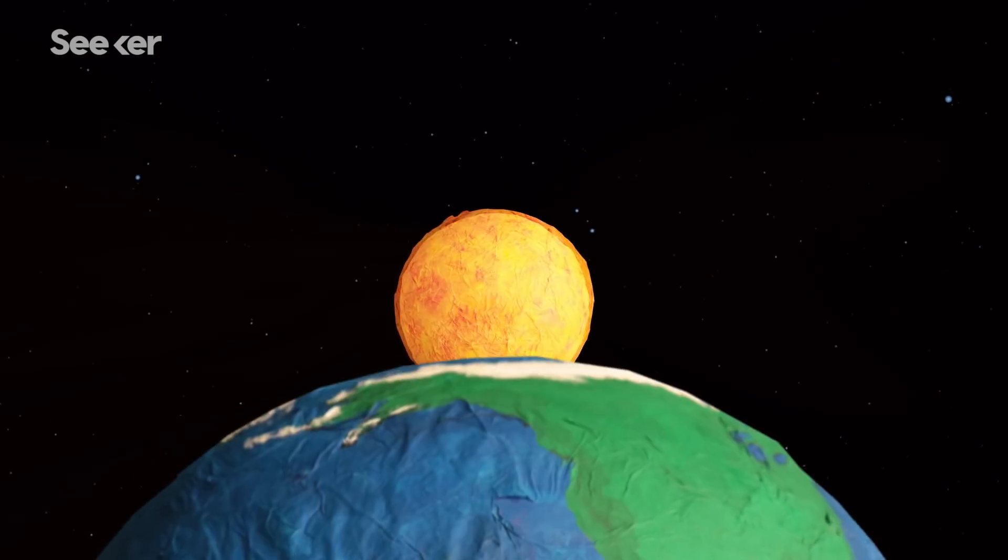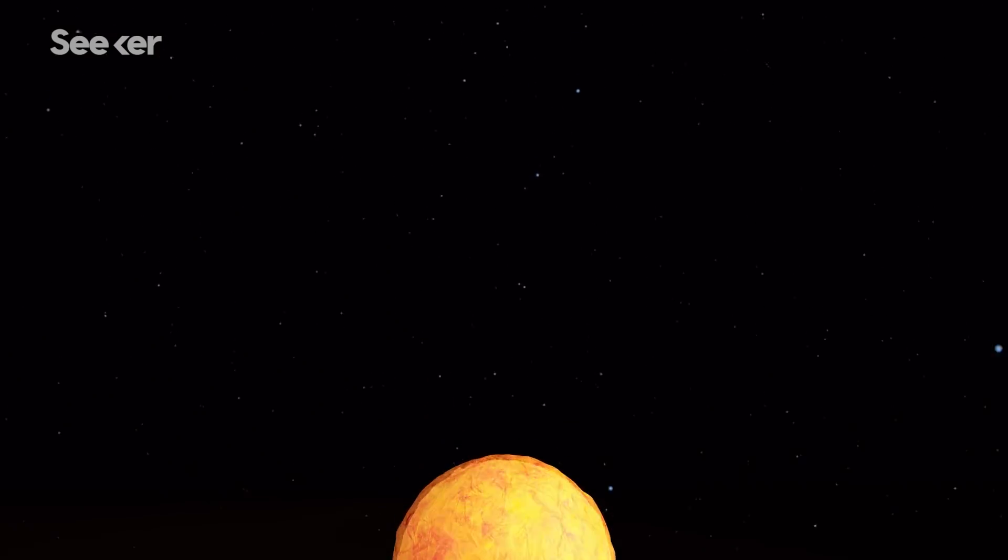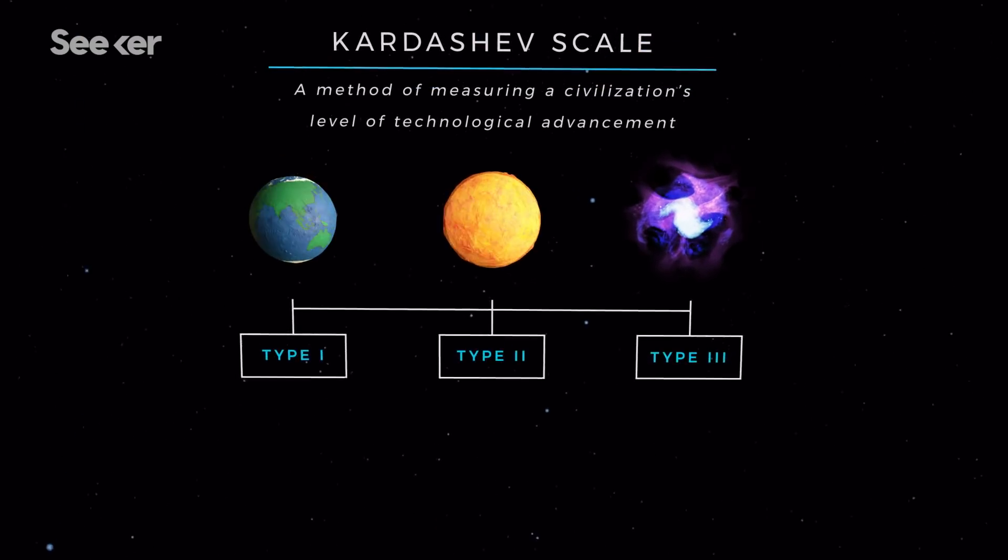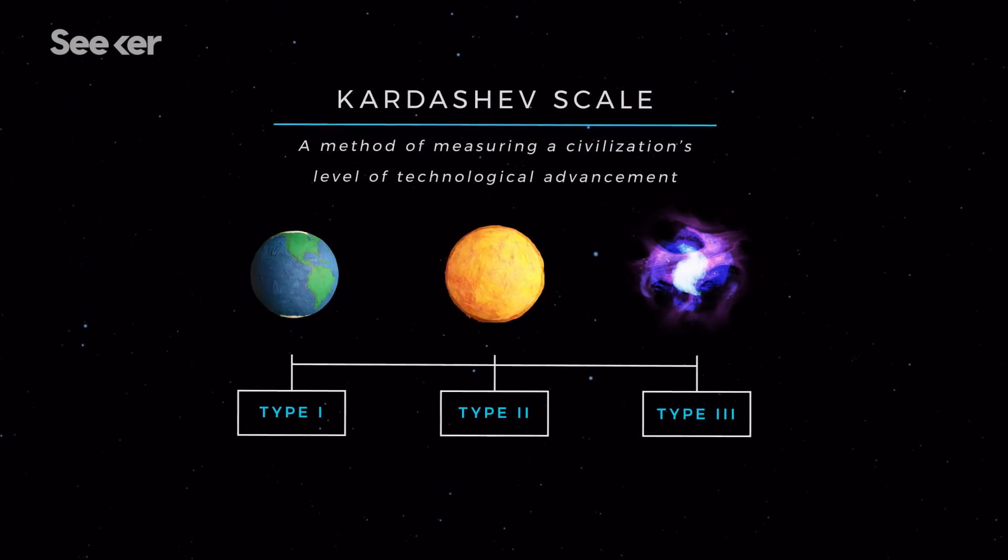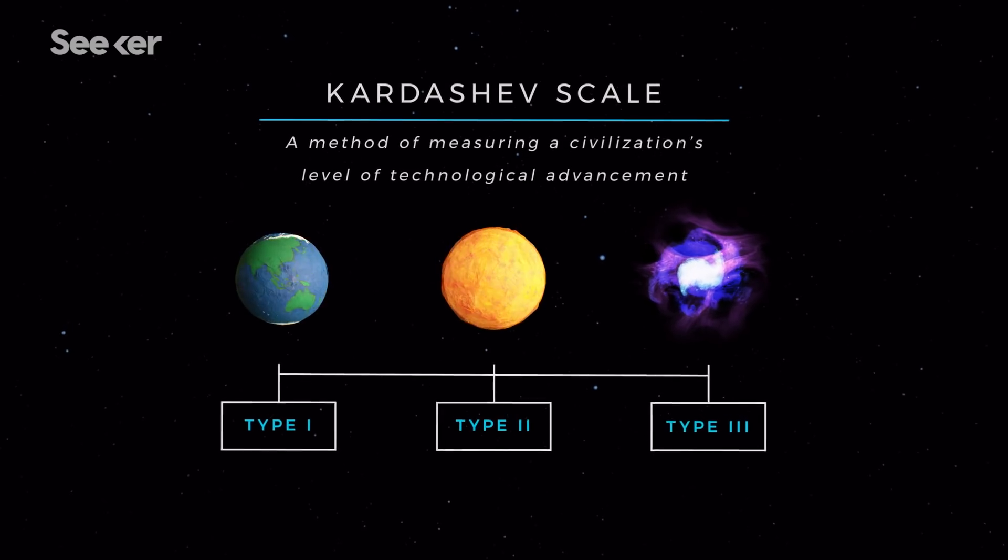If we were to harness the total energy of the Sun, humanity would jump to Type 2 on the Kardashev scale, which is a method of measuring a civilization's level of technological advancement.